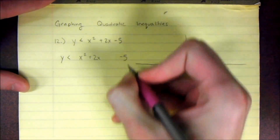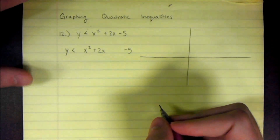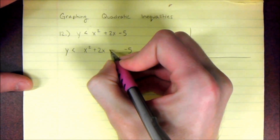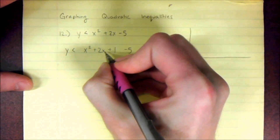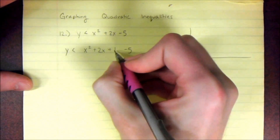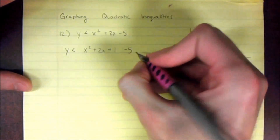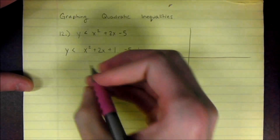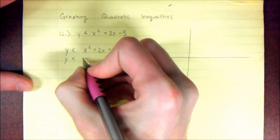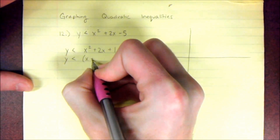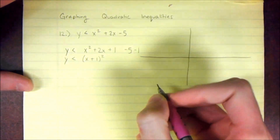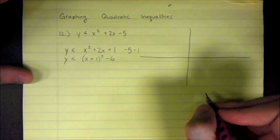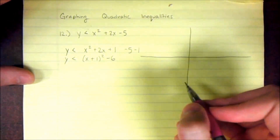To complete the square, look at your middle term which is 2. Take half of that and square it — half of 2 is 1, and 1 squared is 1. So I'm going to add 1 here and to keep the equation balanced subtract 1 from the end. This part should now factor as (x + 1) squared, and I have a negative 6 on the end. So I've got my equation now in vertex form.